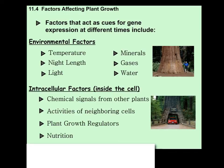Now we have intracellular things — factors that occur inside the cell. Chemical signals from other plants is a big one. Plants next to each other can actually prevent neighboring plants from growing. A great example is a pine tree: underneath it, there's always a perfect circle of dead grass or plain dirt. The needles of a pine tree are extremely acidic, creating an environment that's not healthy for grass. Other intracellular factors include activities of neighboring cells within the plant, PGRs, and nutrition — plants need things like nitrogen and potassium just like we do.